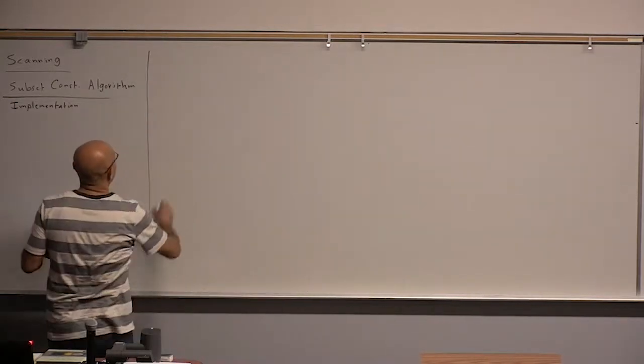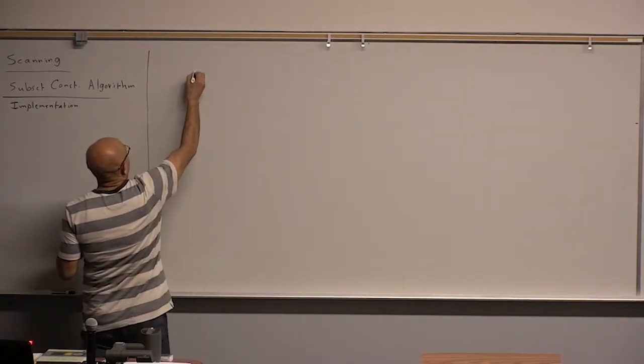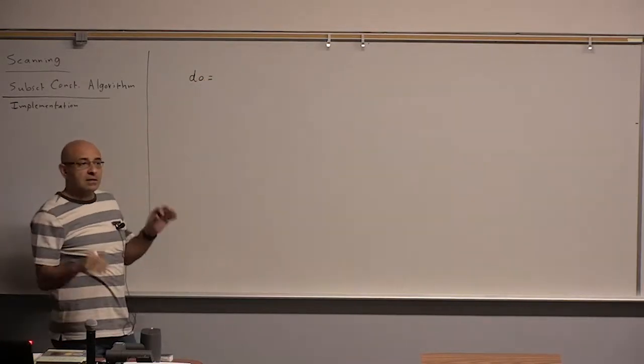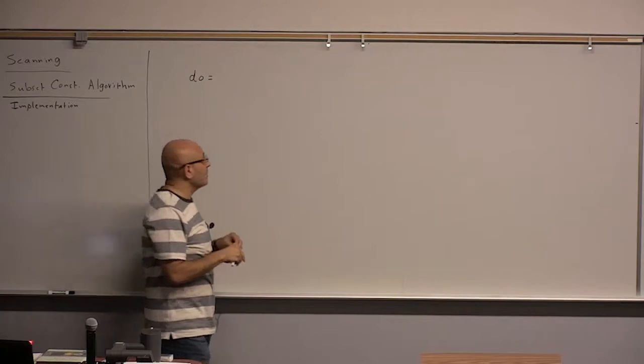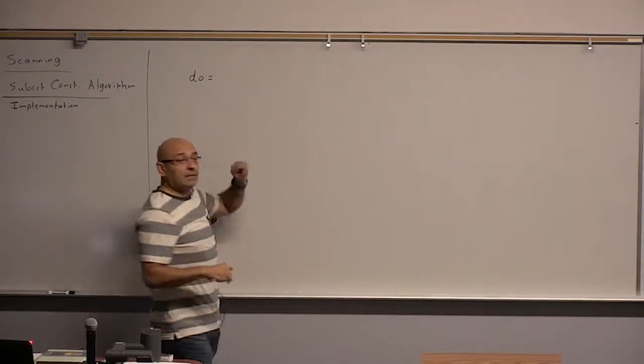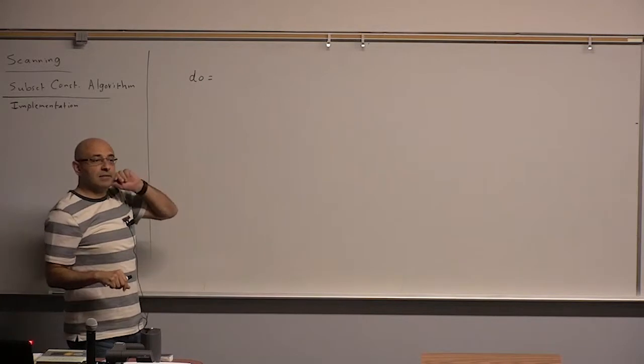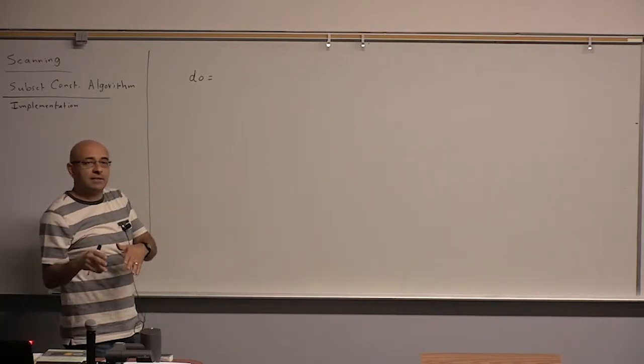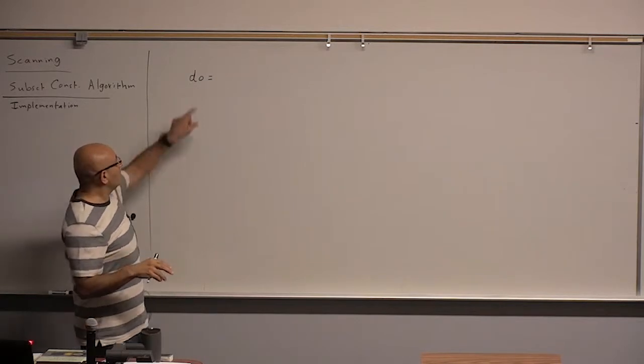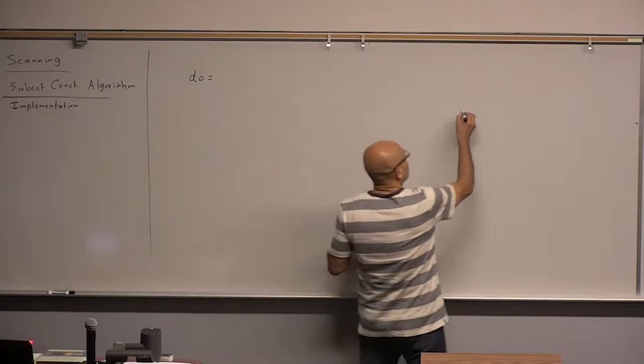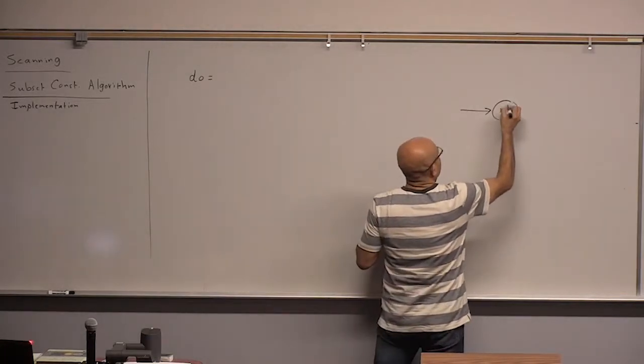So that practical, the more efficient version, first starts with a certain start state. So let's write the code rule. Starting with the D0, that is the start state for the start DFA state. How does this relate to the start state in the NFA?